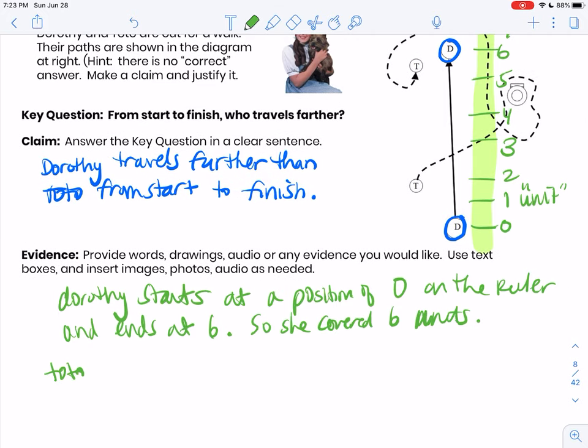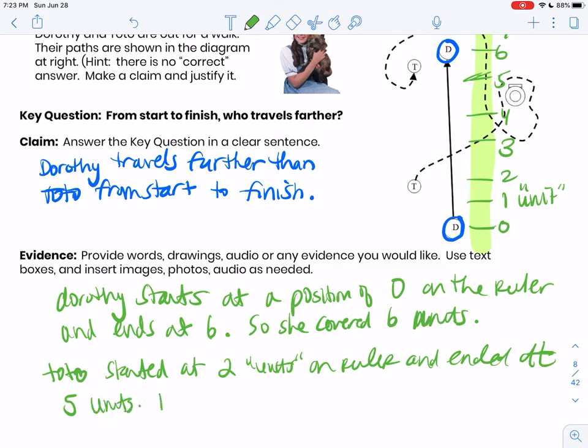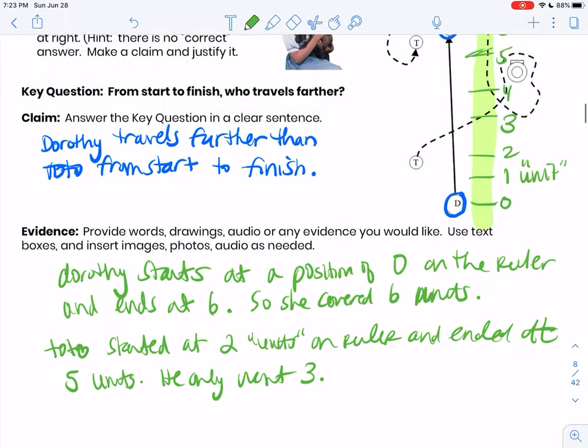Toto, right, because I want to show why Toto's less than Dorothy. I can't just show Dorothy. I have to also show why Toto's less. So Toto started at maybe two units on the ruler. And you could make up units or whatever. And ended at, let's say, yeah, five, five-ish, whatever, five units. He only went three.